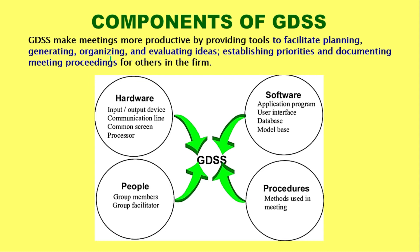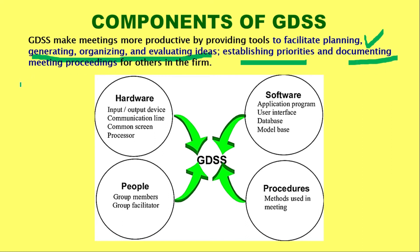GDSS makes meetings more productive by providing tools to facilitate planning, generating, organizing, and evaluating ideas, establishing priorities, and documenting meeting proceedings for others in the firm. These are the objectives of group decision support systems while conducting electronic meetings — they facilitate planning, generate and evaluate innovative ideas from all team members, welcome everyone to speak up through electronic mediums, and document meeting proceedings for use by everyone after the meeting ends.